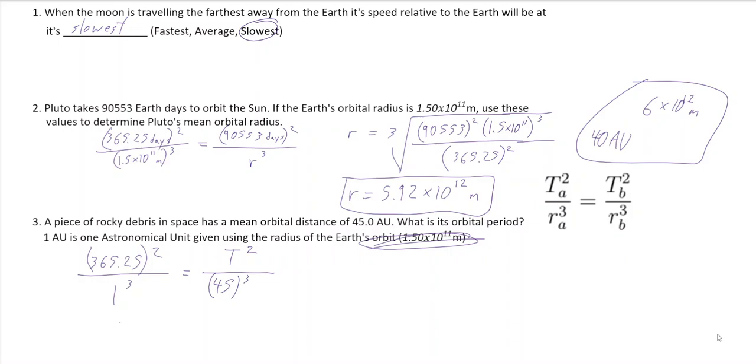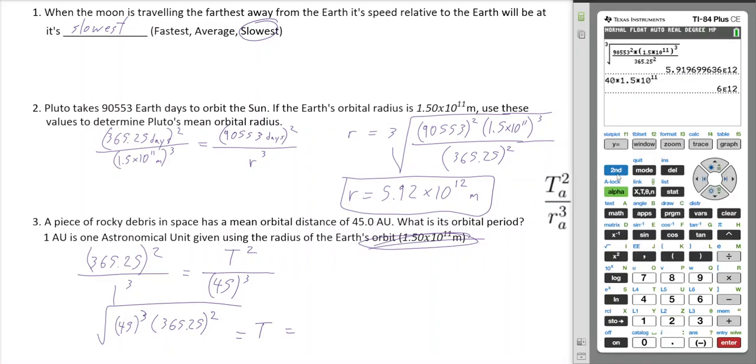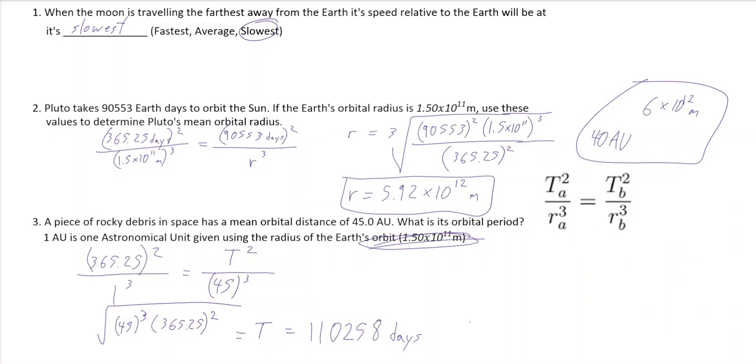What we're going to have is, we're looking for the period up here, and we have the radius, which is 45 AU. Now we can move that over, so it's going to be 45 cubed, and then we'll have 365.25 squared, and then it's over 1 cubed, which as we know, it doesn't really matter. Now, this is T squared, so we can actually get rid of that, and we can make this a squared, and so now we're going to get our final answer, square root of 45 cubed times 365.25 squared, but actually we should get three sig digs, so 1.10 times 10 to the 5 days.